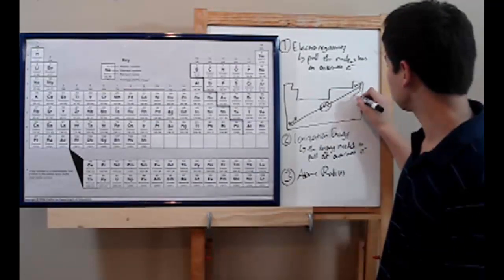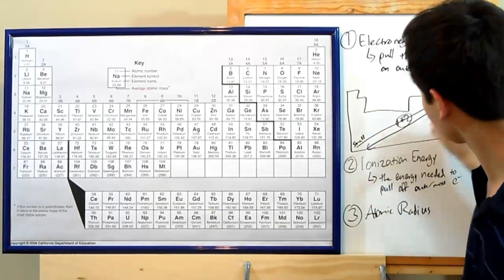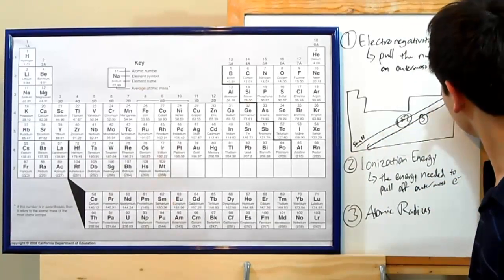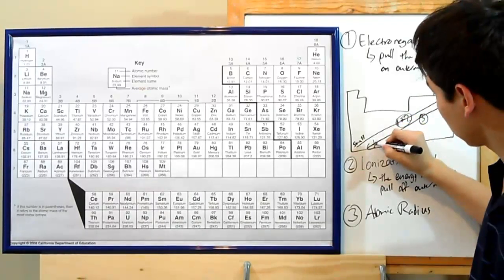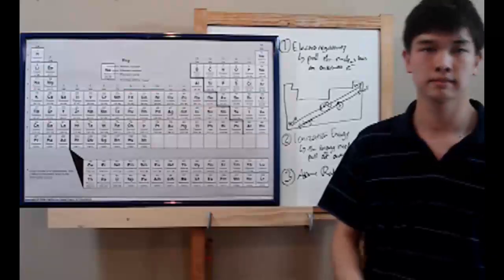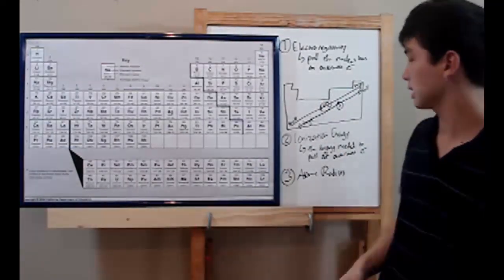That follows the opposite trend. Over here, at the top right-hand corner, it's at its smallest. And down here, in the lower left, it's at its largest. Why is this? Well, just go back to electronegativity.